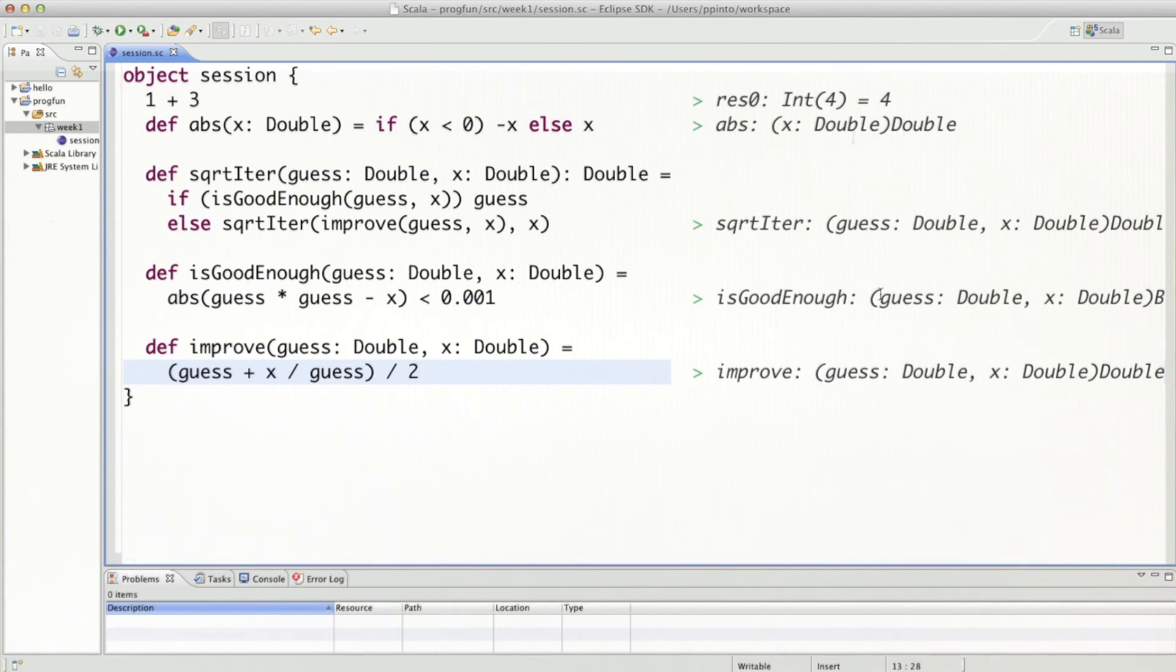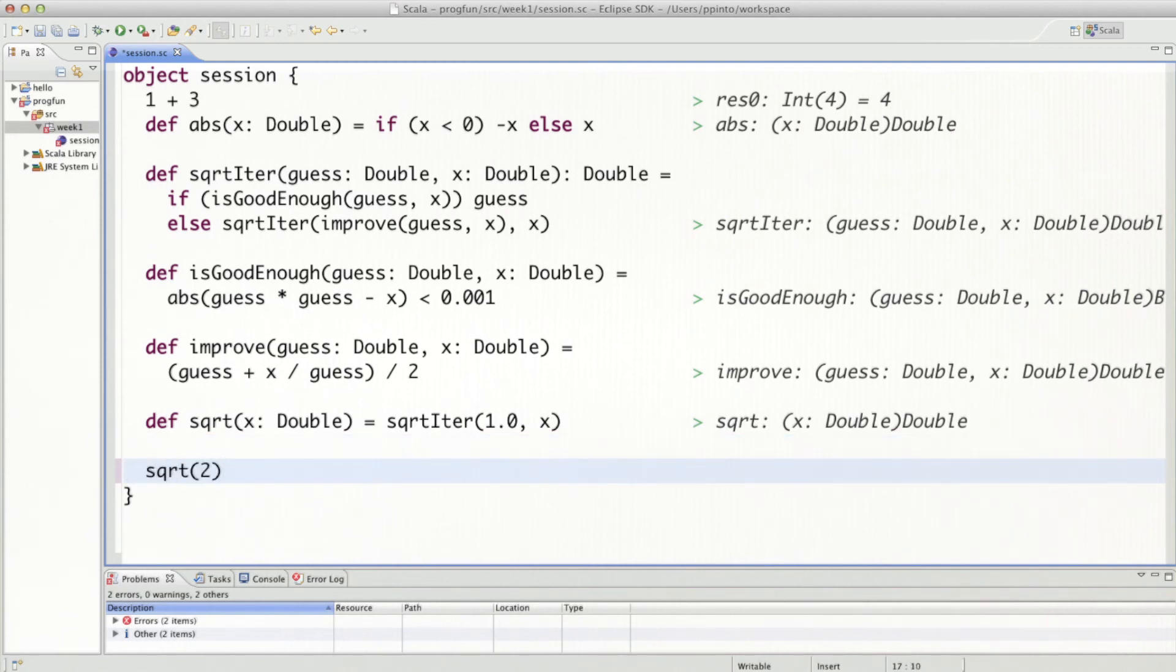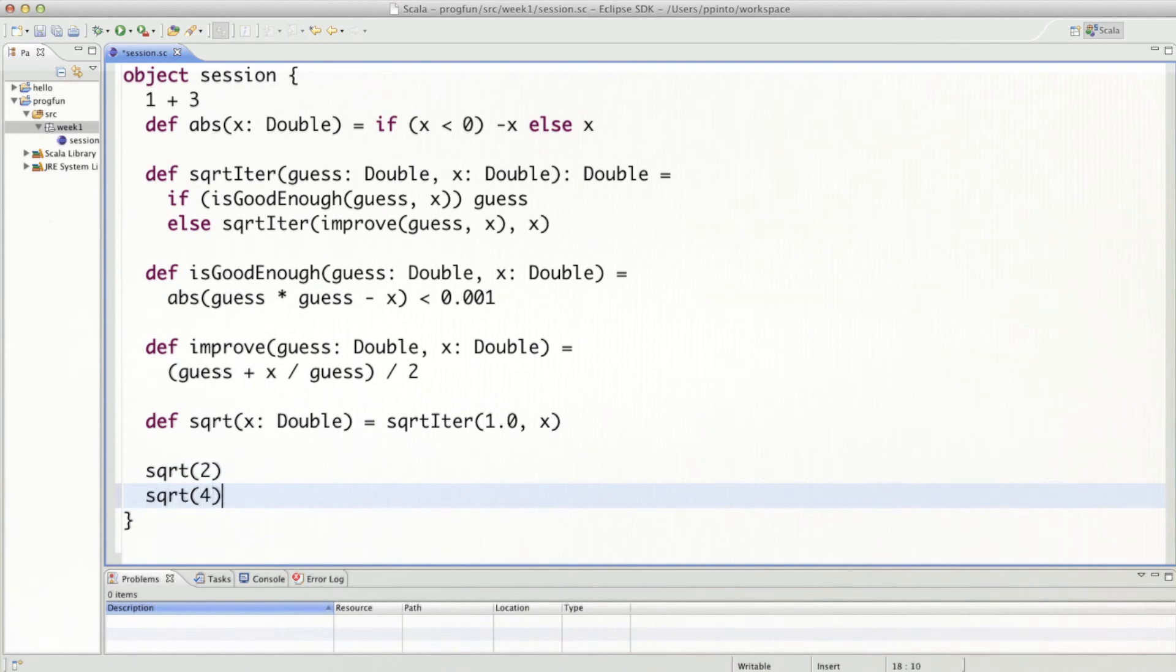Now we have a worksheet that compiles. You see here on the right hand side, you see all the types. The last function we need to define is square root itself. What would that be? It would be the square root iteration with our first initial value, we said that was 1.0 and x. Now we have all the elements in place and we can start to test our function. Let's start with square root of 2. And we get 1.4142. So that looks right. Let's do another one. Square root of 4. And we get something close to 2 as we would expect.